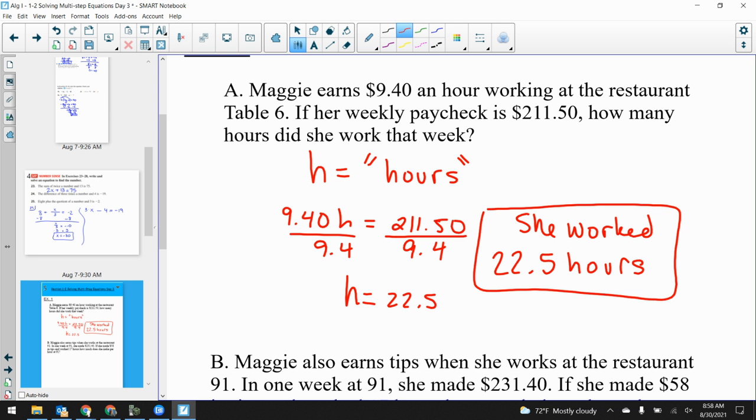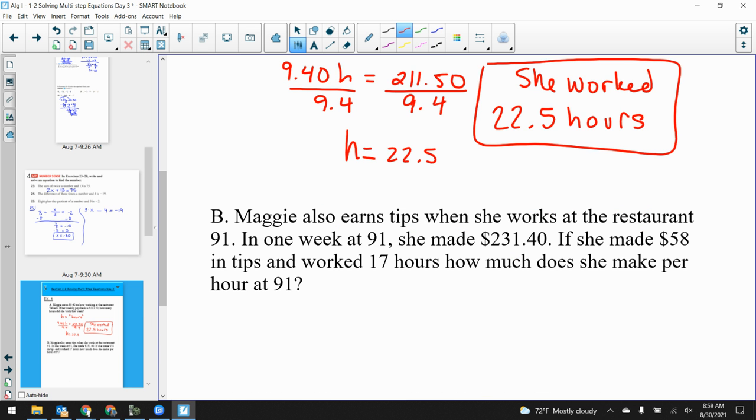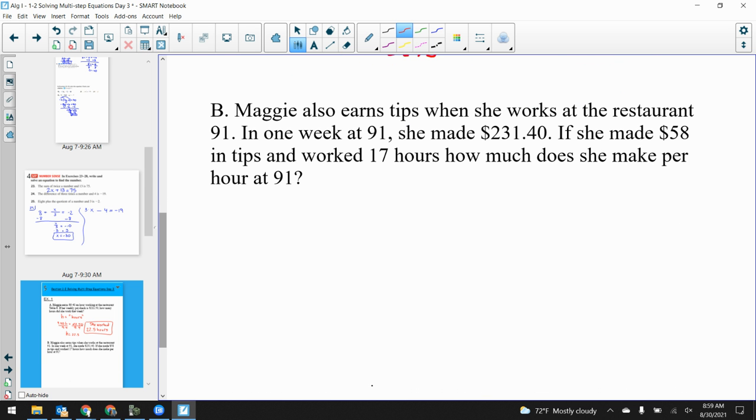Make sure your answer is reasonable. What if I had gotten she worked 225 hours? Is that reasonable? No, that's not reasonable. How many hours are in a week? 7 times 24 hours, 168 hours. That's not even possible to work 225 hours a week. So make sure your answer is reasonable. It is in this case.